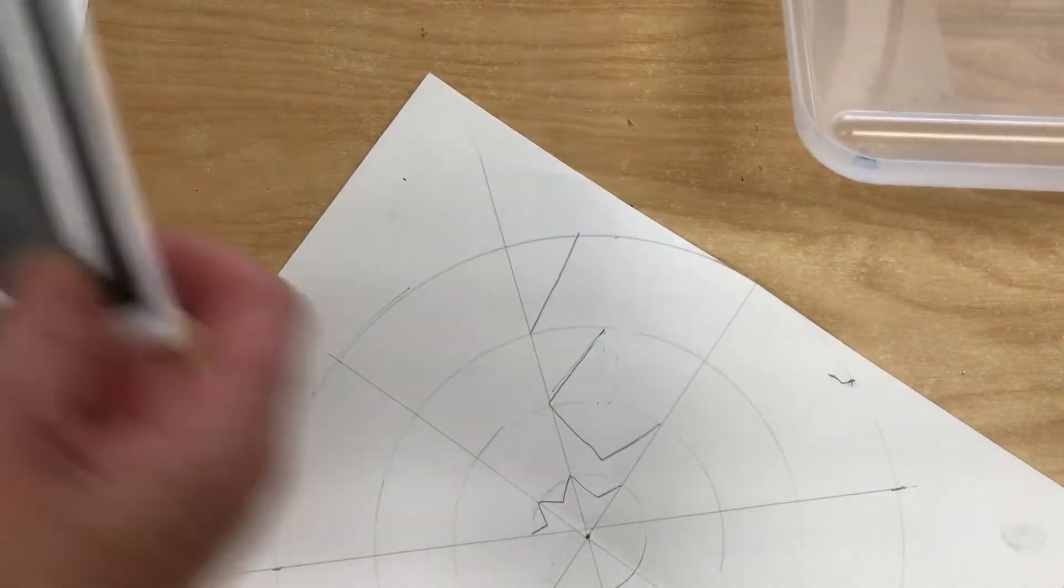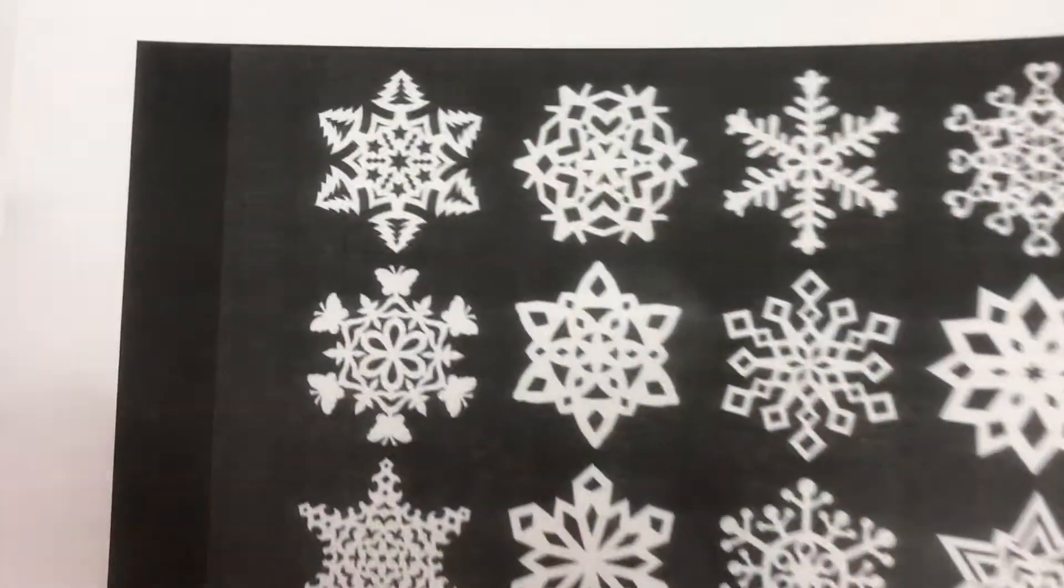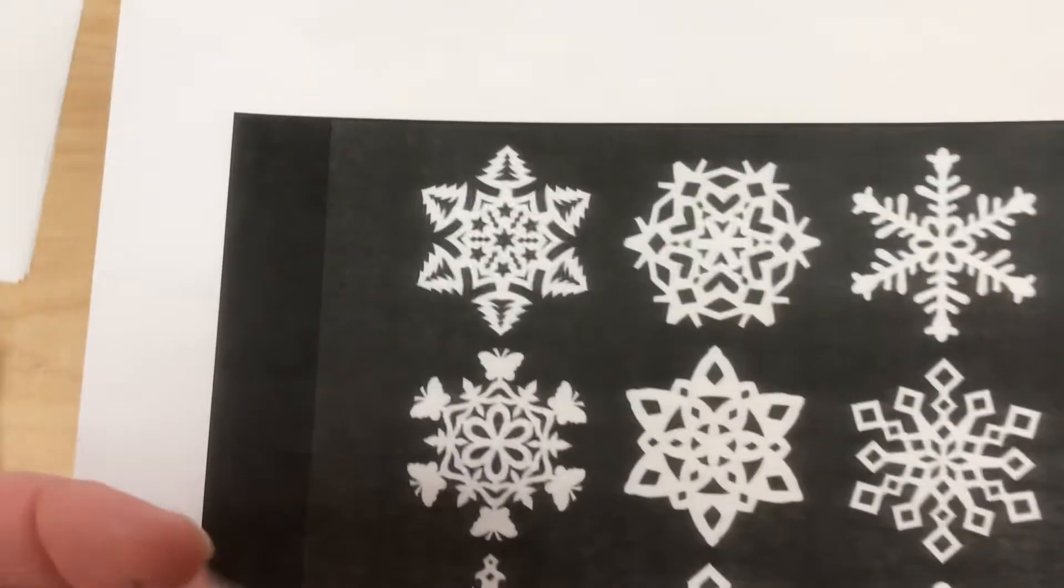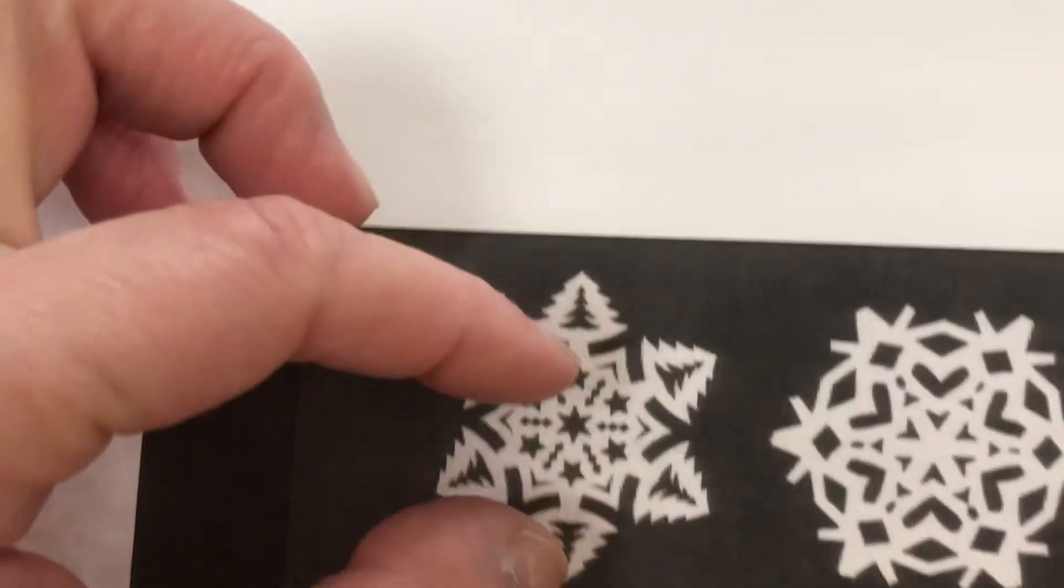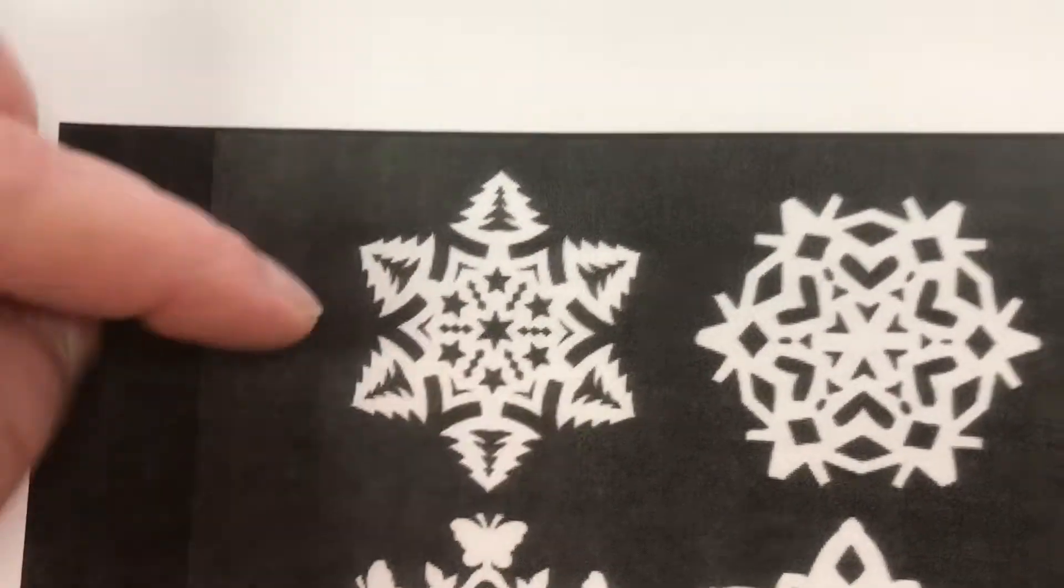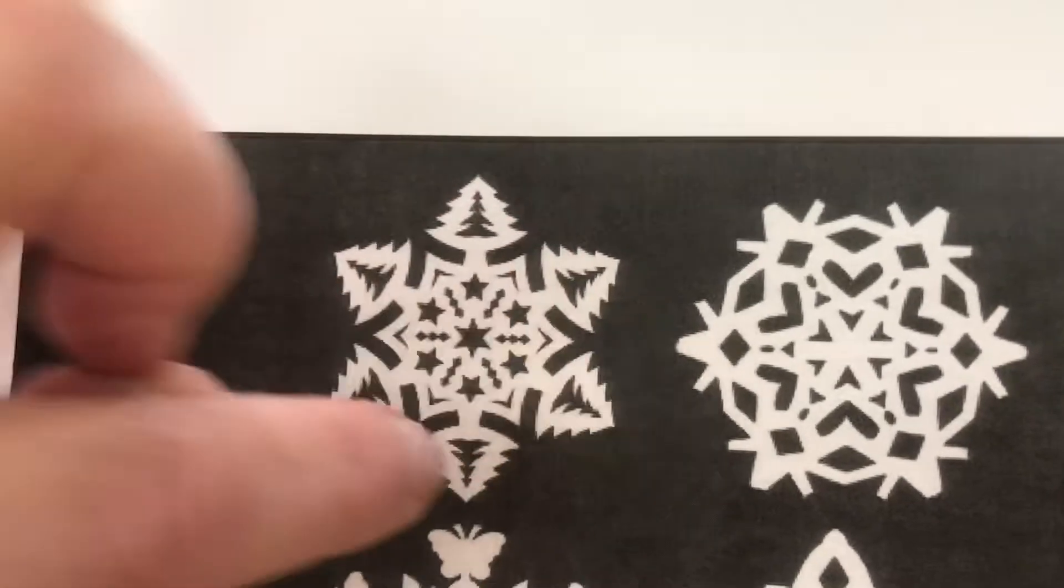I want you to make the snowflakes so they kind of look like they were cut out, and that's why instead of lines you're going to have shapes.